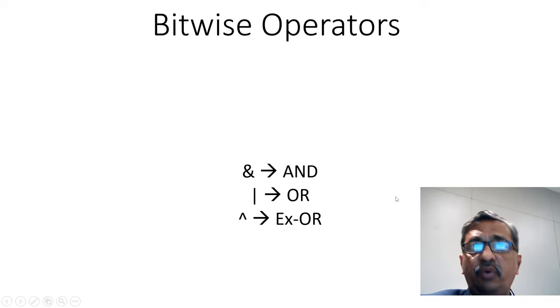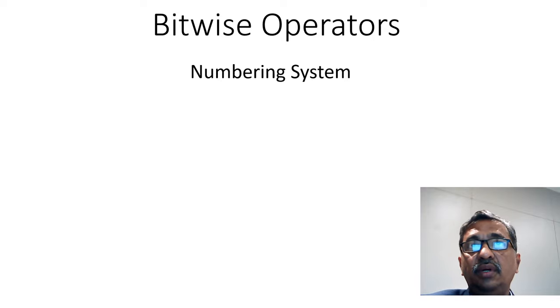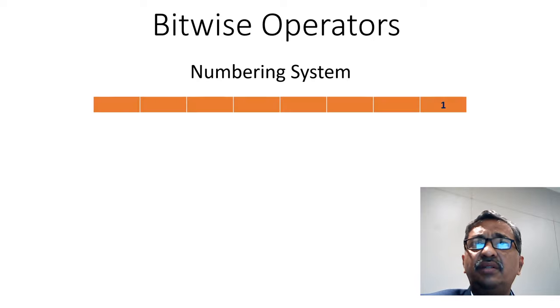There are three bitwise operators which we are looking at: AND, OR, and XOR. Now, we have to remember one numbering system. That is a very easy numbering system. You start the number with 1. Every time you multiply the previous number by 2.